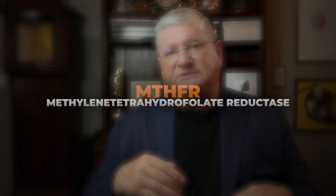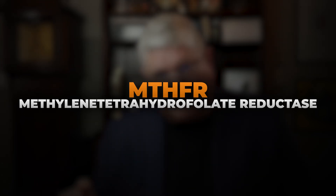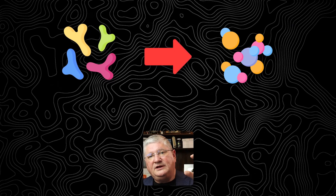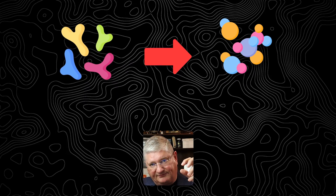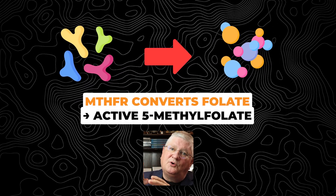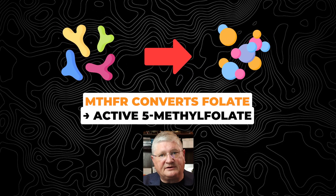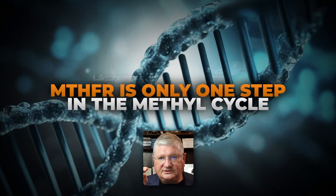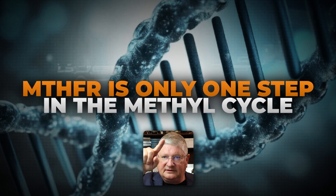MTHFR is methylene tetrahydrofolate reductase. What it does as an enzyme is take a preform of the active folic acid — 5-methylfolate — and convert that preform over to 5-methylfolate, which is what is used in methyl cycle transfer. That's very important to know first. But MTHFR is just one of many intermediate enzymatic steps in the methyl cycle.